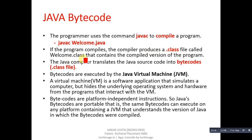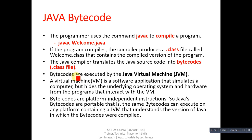If the program compiles successfully, the compiler produces a .class file — for example, 'welcome.class' — that contains the compiled version of the Java program. The Java compiler translates the Java source code into bytecodes, meaning a .class file. Bytecodes are executed by the Java virtual machine. If we want to execute Java bytecode, we need the Java virtual machine. A virtual machine is a software application that simulates a computer.